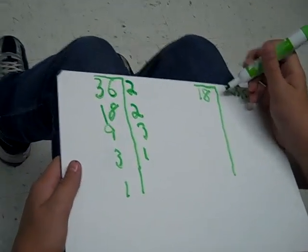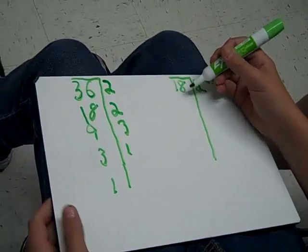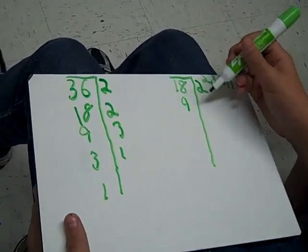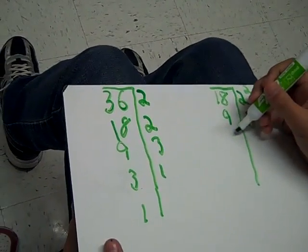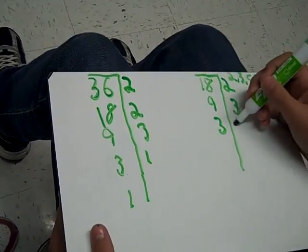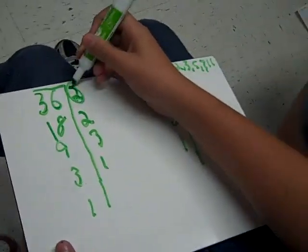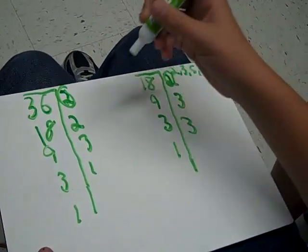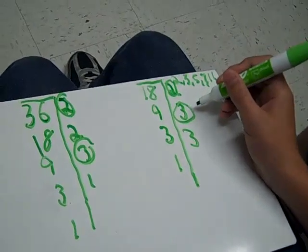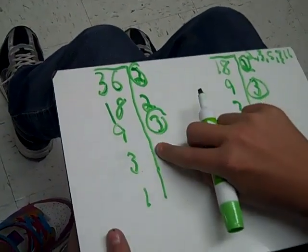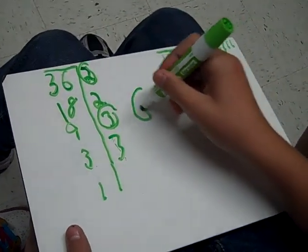And then you always have to start with the lowest number. And then you have to see what they have in common — so 2 and 3.